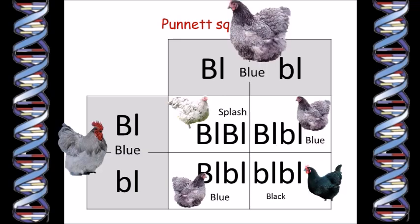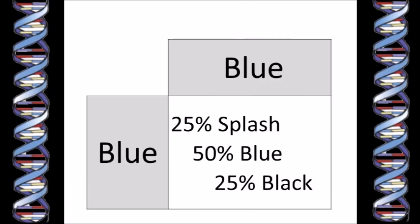The blue colour does not breed true. We can even predict how many blue, black, and splash chicks there will be: half will be blue, a quarter will be black, and a quarter will be splash. Of course, those are the theoretical proportions, and you might need a large number of chicks to actually see the predicted proportions of each colour.